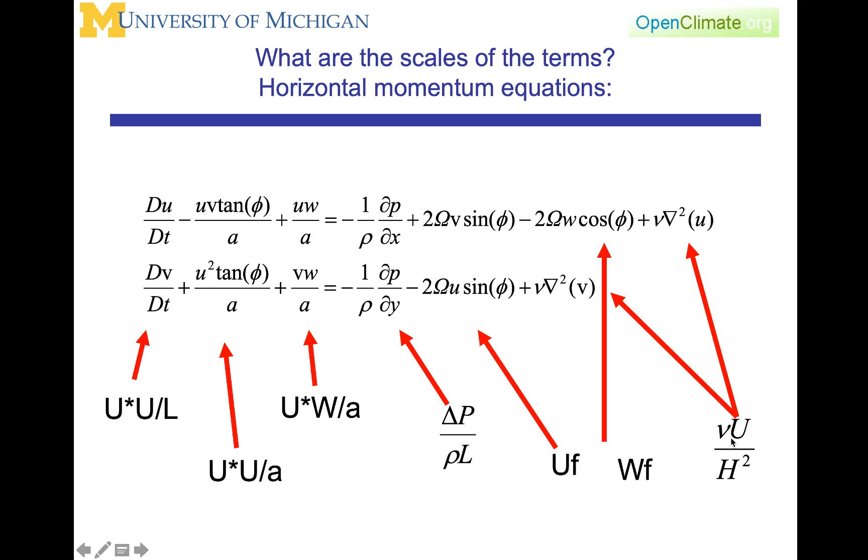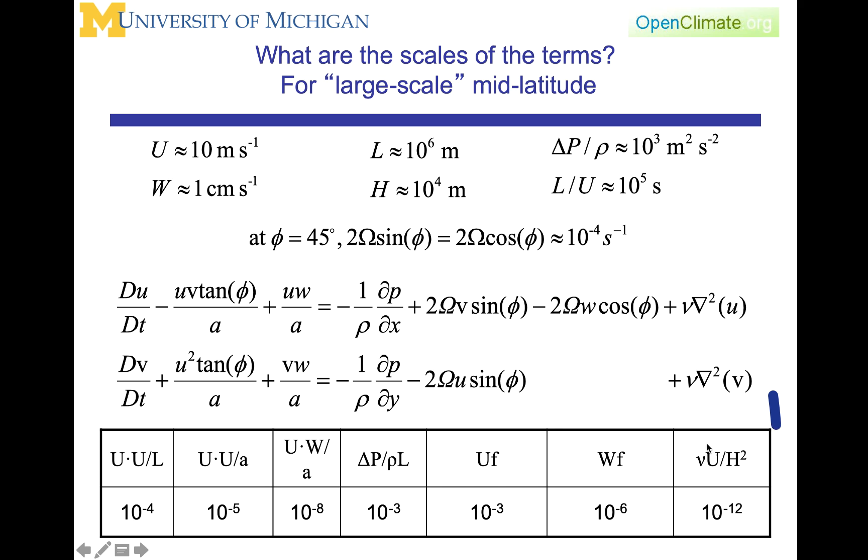If we then take that and put the numbers into it, what we find is that this viscosity term is like 10 to the minus 12. This wf term is on the order of 10 to the minus 6. This curvature term, uu over A, is 10 to the minus 5. This curvature term of uw over A is 10 to the minus 8. The acceleration term, u squared over L, is 10 to the minus 4. And the pressure gradient term and the Coriolis terms' scale is 10 to the minus 3. These two terms, the pressure gradient and the Coriolis terms, are for large-scale motions, they have the tendency to be the largest terms.